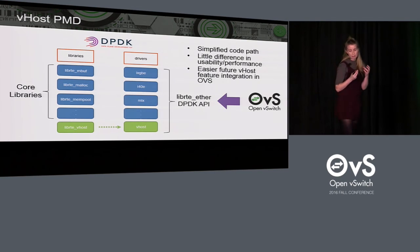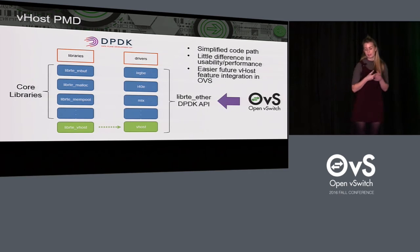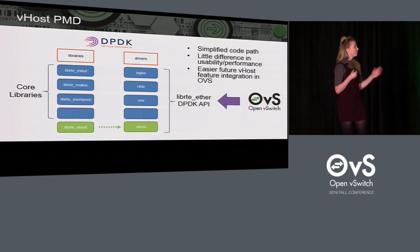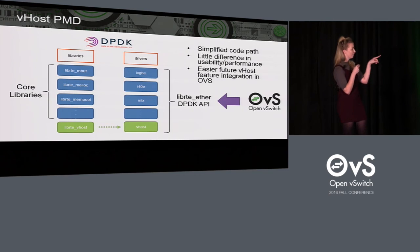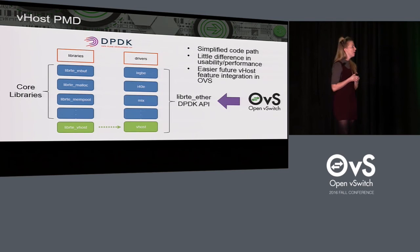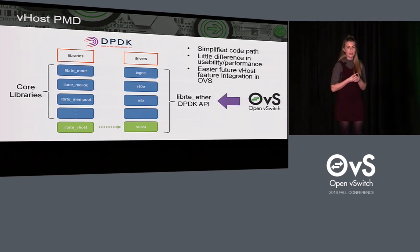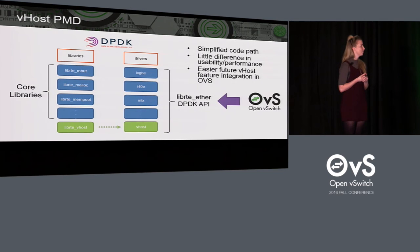As regards performance and usability, there shouldn't be any difference noticed by the user — it's pretty much on par with calling the library directly. One of the main benefits of using the vhost PMD in OVS will be easier future integration of vhost features in Open vSwitch. Previously, for every new vhost feature we had to look at the vhost library directly. With the PMD, we can go through the Ethernet API, which is more familiar, making it easier to integrate future features.